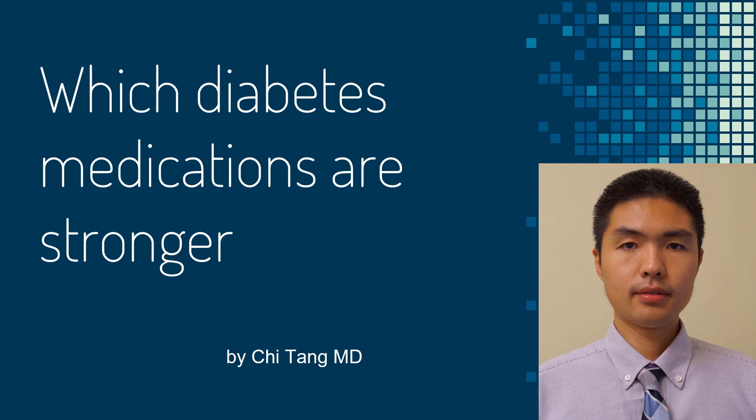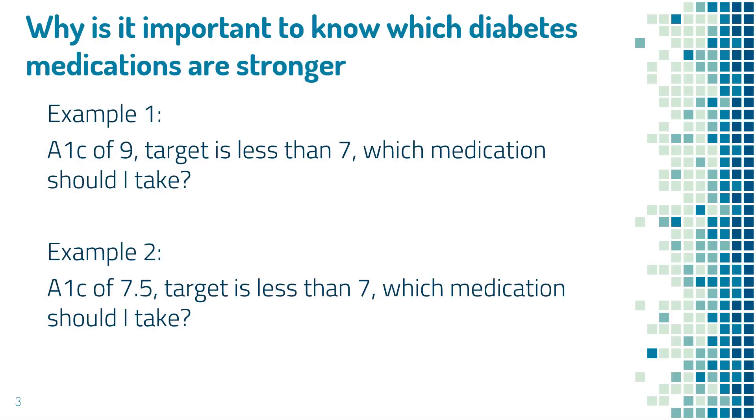In this video we'll talk about the strength of different diabetes medications. The strengths here are for type 2 diabetes. If you have type 1 diabetes, most of this medication will not work for you or will not work much for you, and you will need to take insulin.